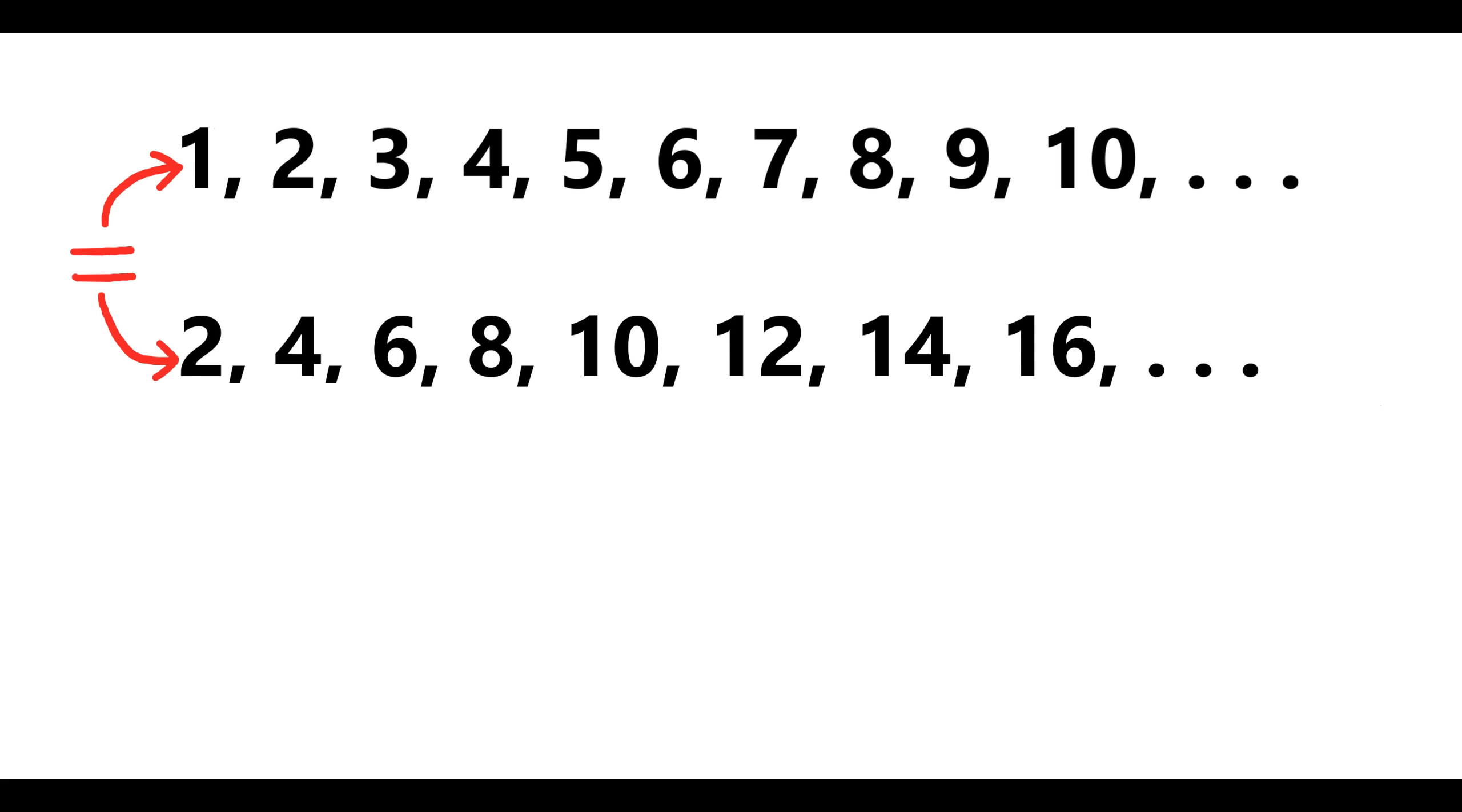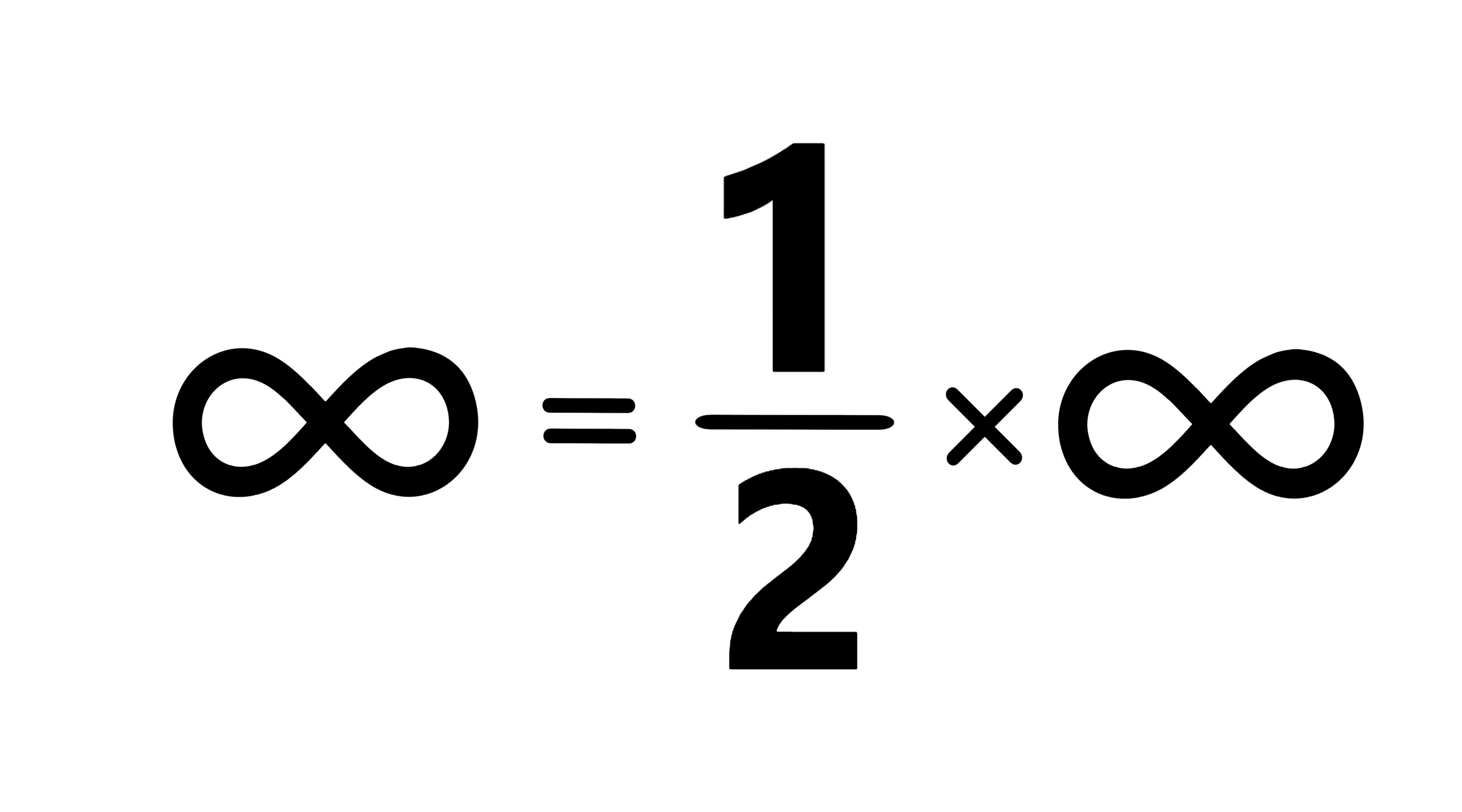So this tells us that removing half the numbers, odd numbers in this case, from an infinite set of whole numbers just gives us a set which is identical, mathematically identical, to a set we get by doubling all the numbers in that set. And that just tells us that removing half the elements of an infinity gives us an infinity which is exactly the same size as the one that we started off with.